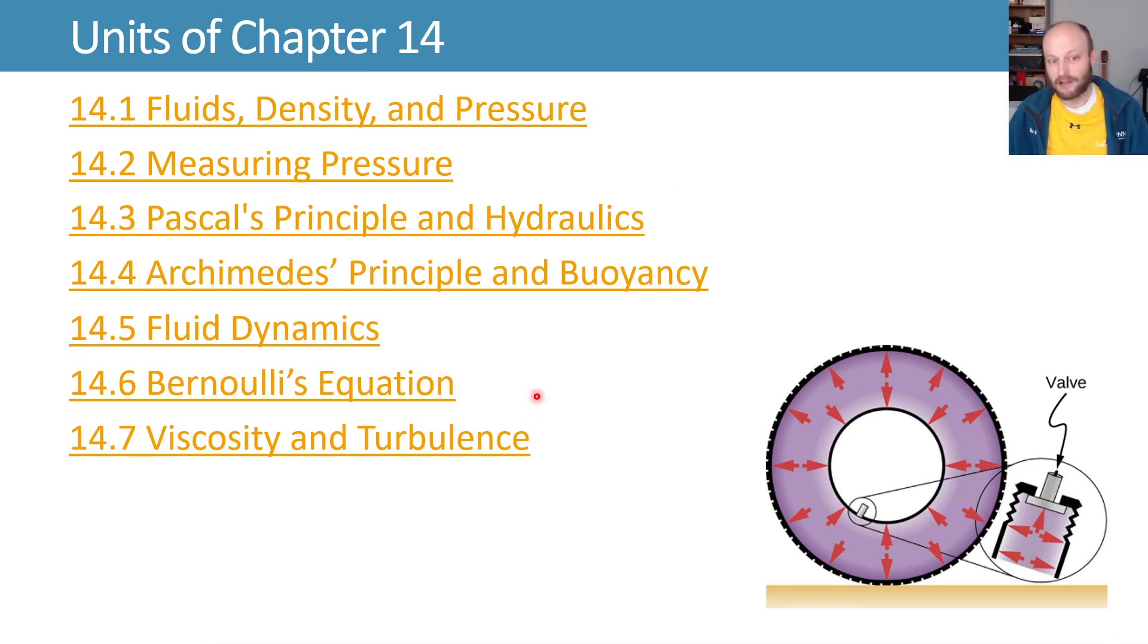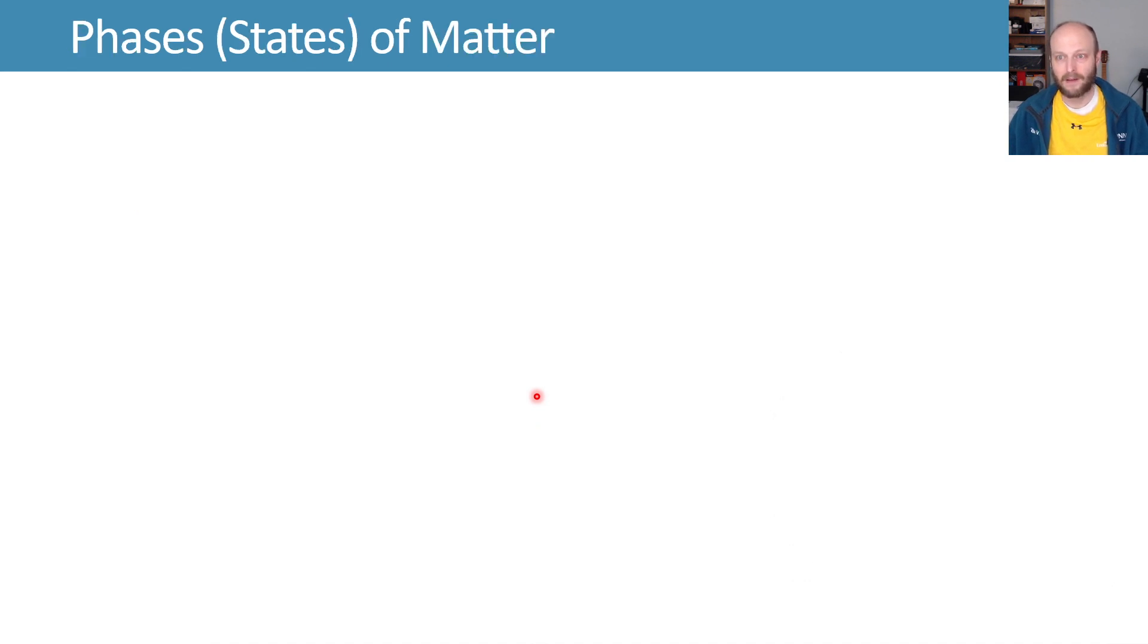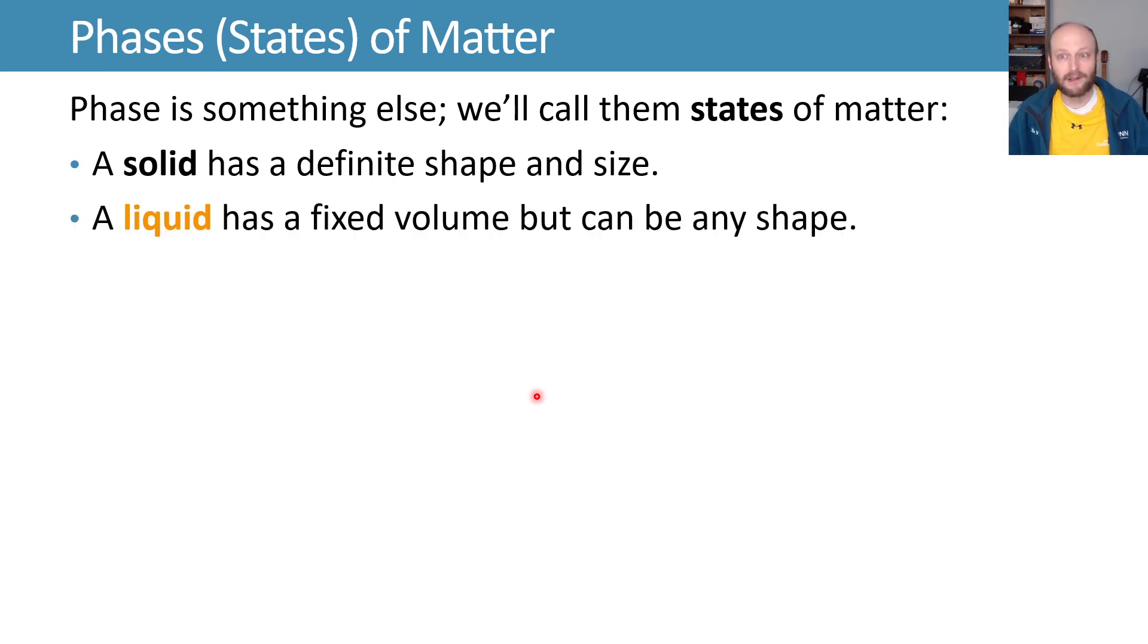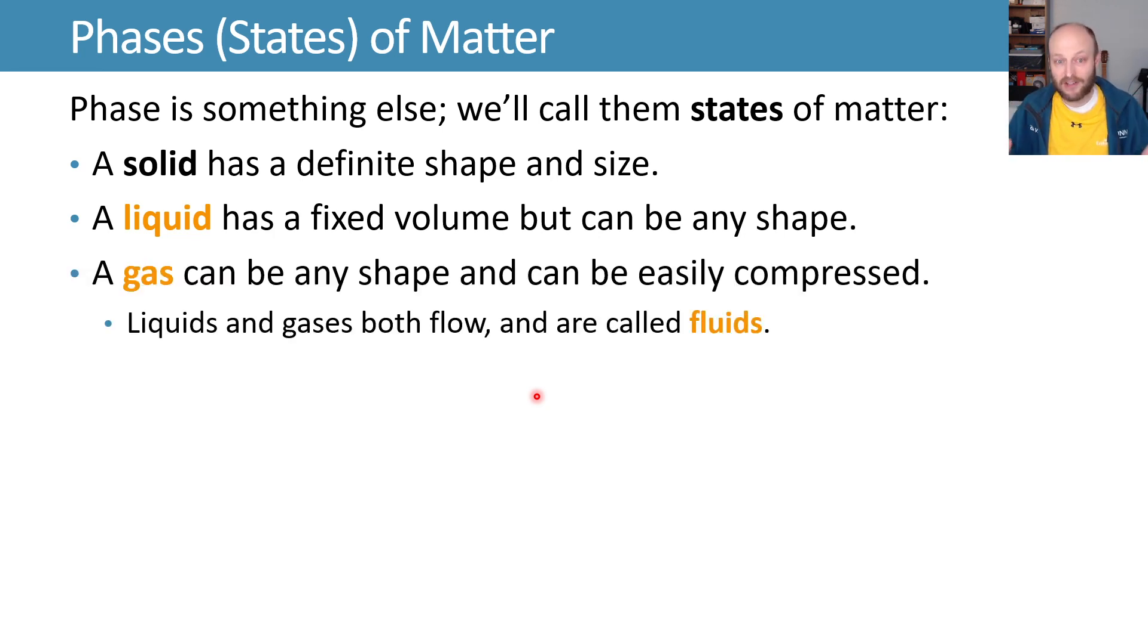First, let's define some phases or states of matter—I'll call them states of matter. A solid has a definite shape and size. A liquid has a fixed volume but can be any shape. A gas can be any shape and takes the shape of its container. It can be easily compressed compared to a liquid, which generally isn't. Liquids and gases both flow and are called fluids.